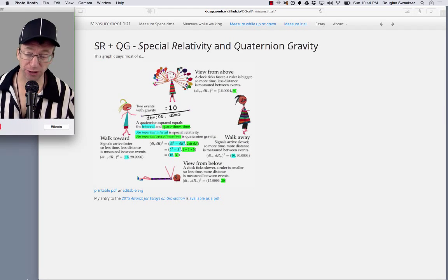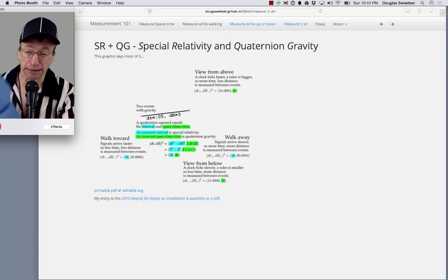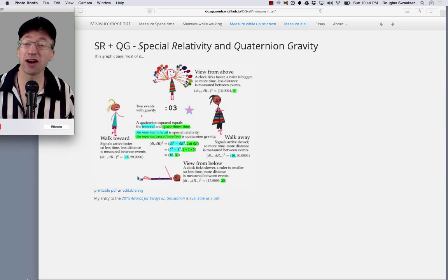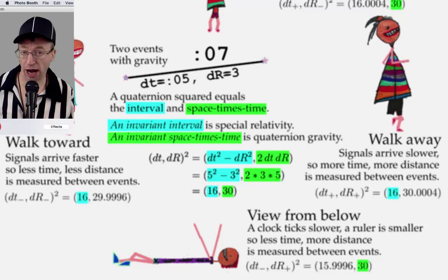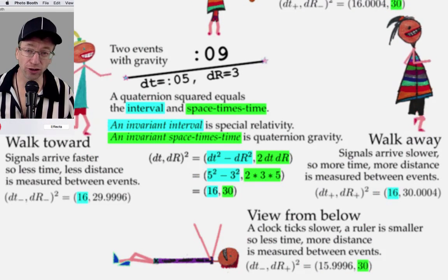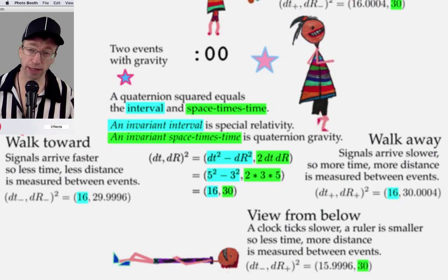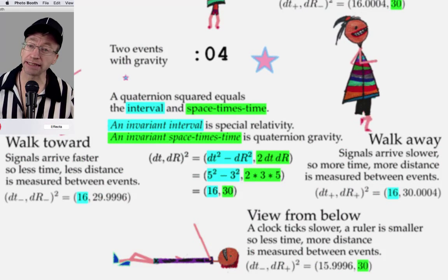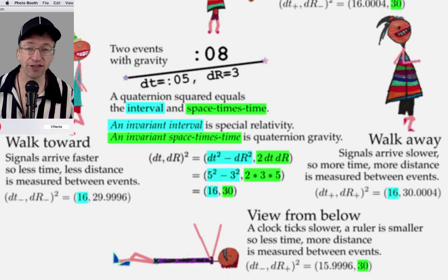Now, this page tries to say too much because it's like a three-hat affair, so let's try not to get confused. We start where we always do, which is to say that a quaternion squared equals the interval and space times time. An invariant interval is Special Relativity — it's the stuff in blue. An invariant space times time is quaternion gravity — it is the stuff in Kelly Green.